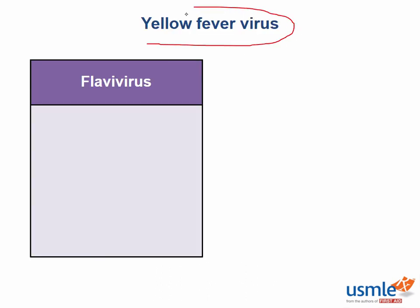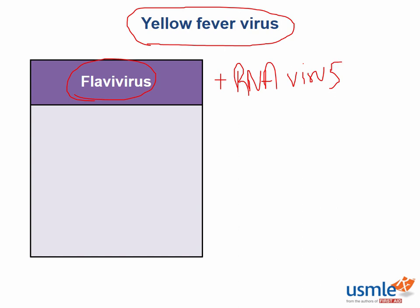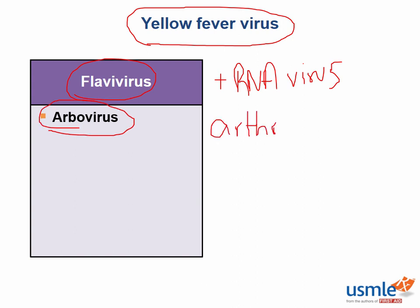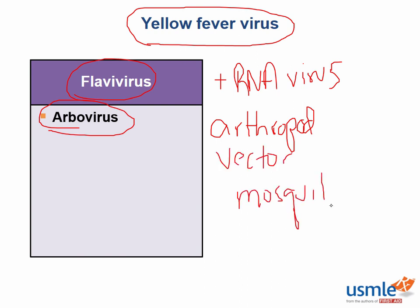The yellow fever virus is an important flavivirus, a family of positive sense RNA viruses. The yellow fever virus also belongs to a category of viruses known as the arboviruses. These viruses all share a common feature of being spread through an arthropod vector, most commonly being the mosquito.